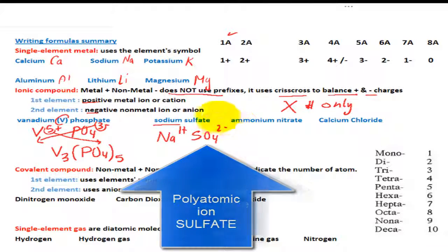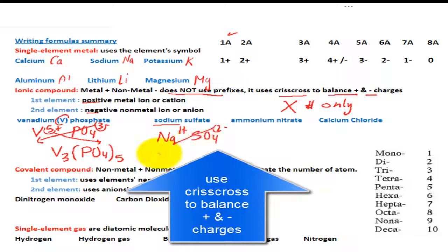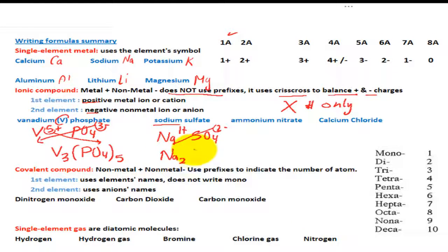SO4 2-. And here we go, we do the criss-cross to balance out the charge, which gives us Na2, then we have SO4. When we criss-cross down, we don't have to use parentheses.